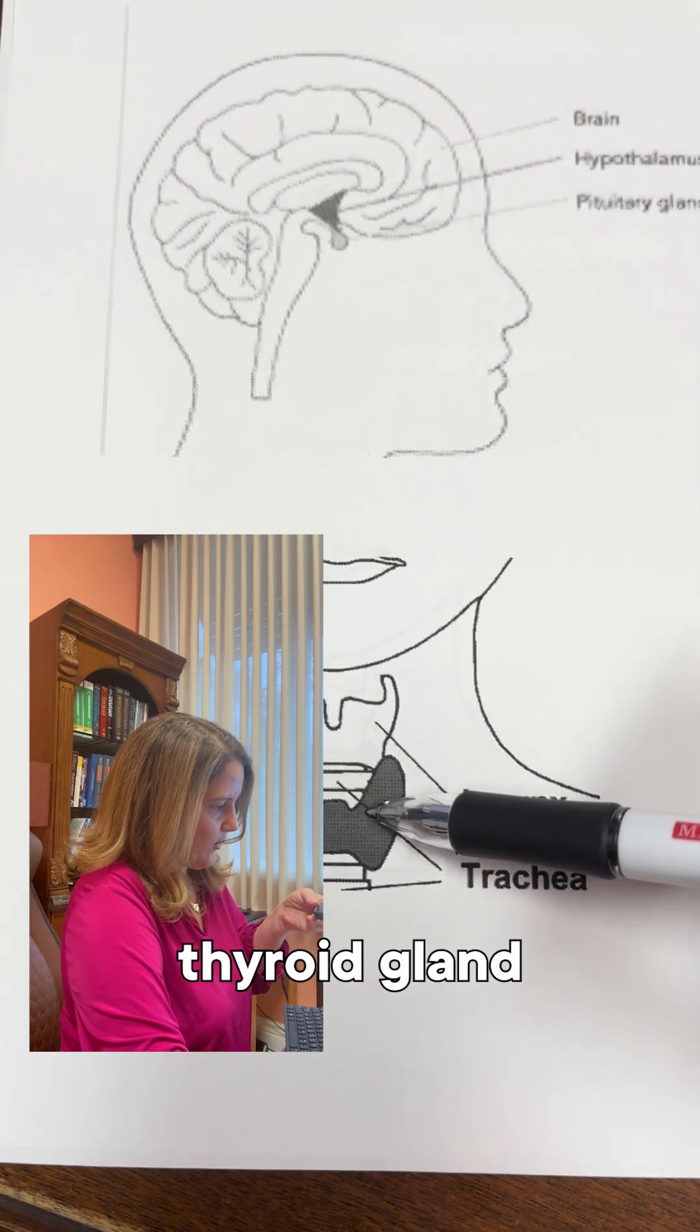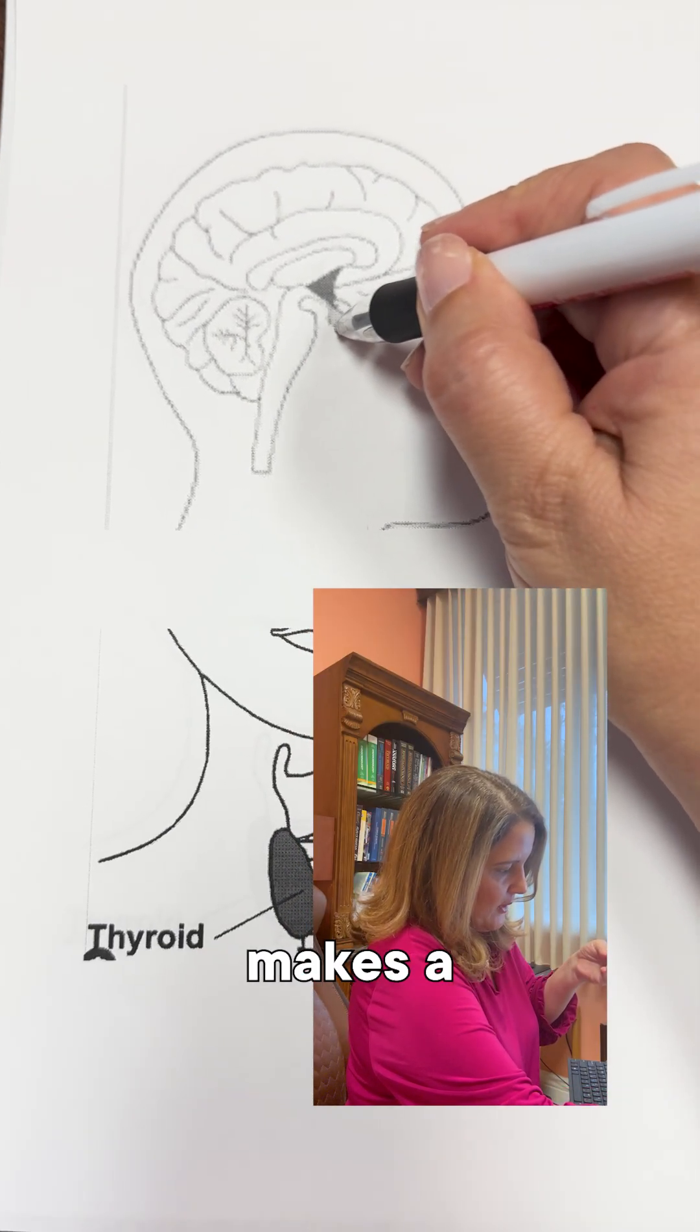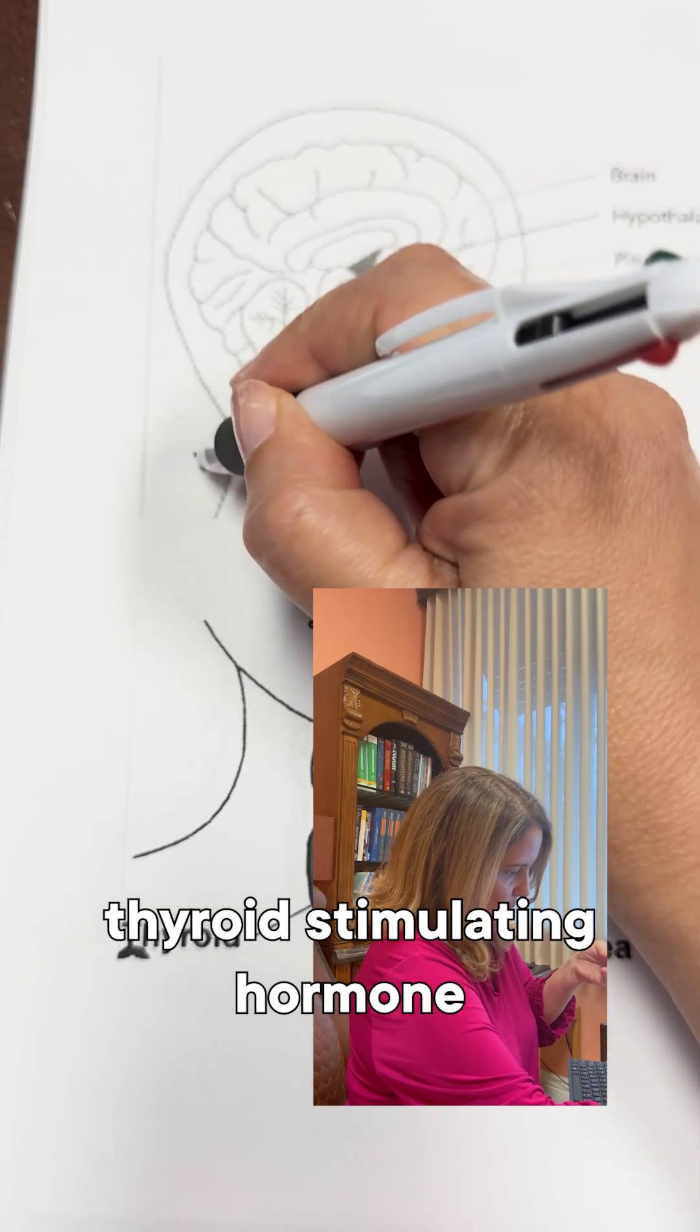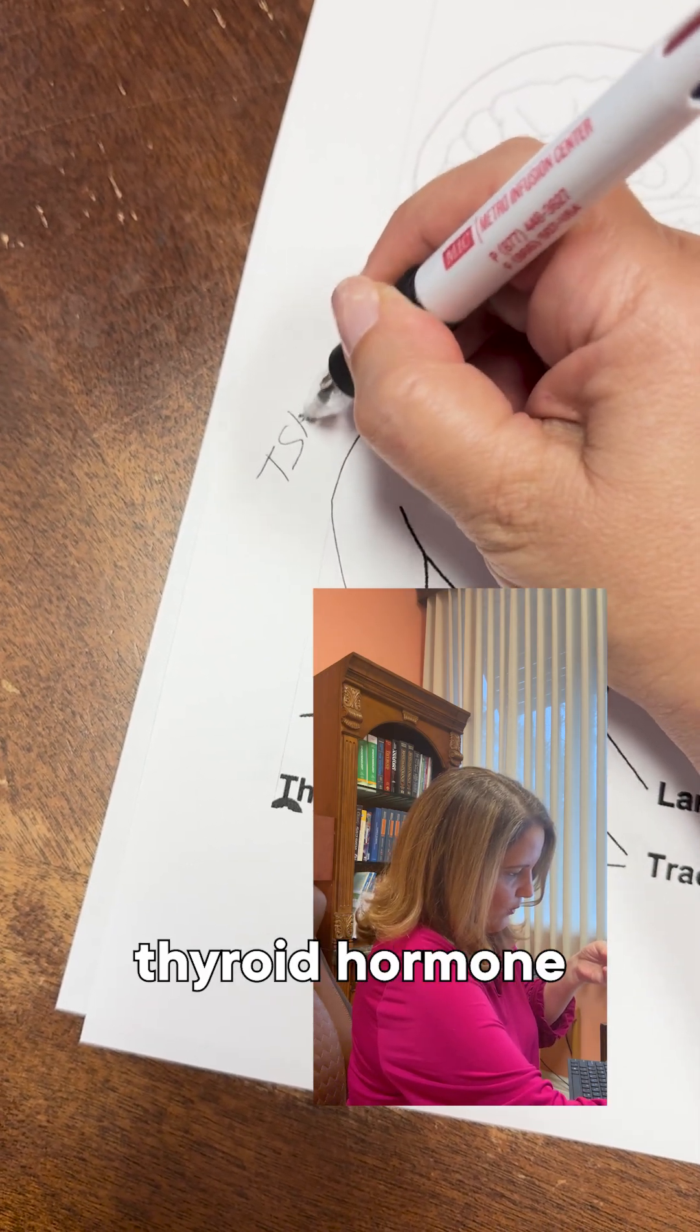And this is the thyroid gland. This is a front view and this is a side view. So normally the pituitary gland makes a hormone called thyroid stimulating hormone that goes to the thyroid and stimulates the thyroid to make thyroid hormone.